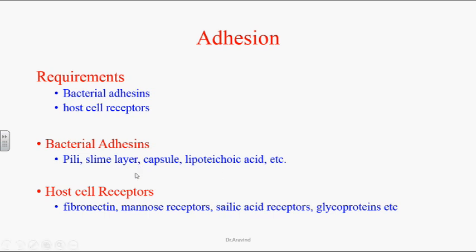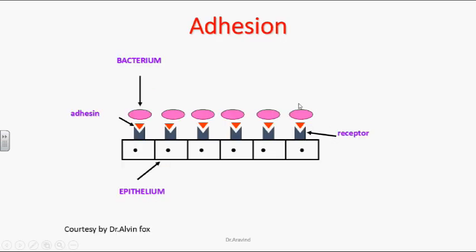So the bacteria will come and attach to the host cells. Here is a picture that explains the adhesion of bacteria to the host cell epithelium. This is the epithelium of the host cell, and these are the receptors present on the host epithelial cells — the black colored dots. The pink colored circular ones are bacteria. These bacteria have adhesins like pili or glycoproteins, and whenever these glycoproteins attach to the specific receptors on the epithelial cell, the bacteria attach to the epithelium and can cause infection.